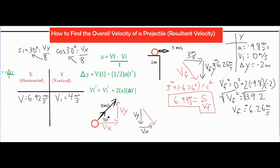Going back to our projectile concepts: if you fire something upward at 4 meters per second, when it comes back down to ground level the final velocity is the same magnitude but opposite sign — negative 4 meters per second. So our final vertical velocity is negative 4, and our Vx remains constant at 6.92 meters per second throughout the entire motion and when it lands.